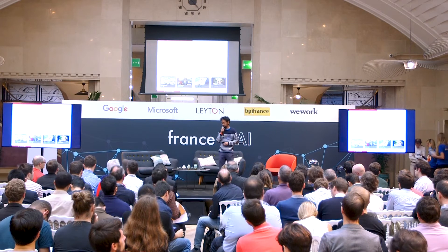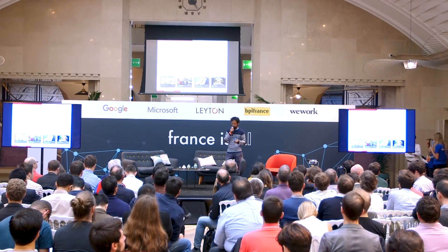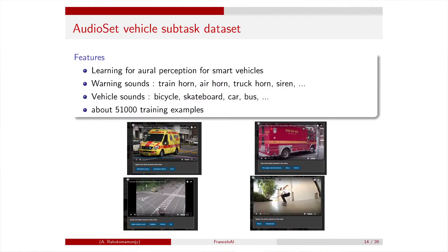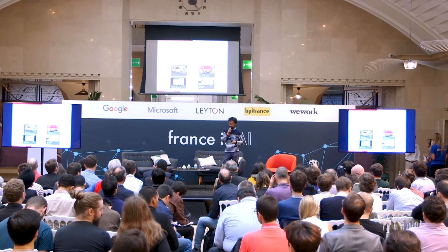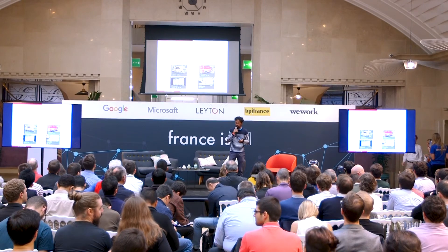For the DCASE challenge this year, we organized and extracted a subset from AudioSet focused on auditory perception for smart vehicles. We wanted to recognize warning sounds like train horns, car horns, truck horns, and sirens, as well as vehicle sounds like bicycles, skateboards, cars, and buses. There is a lot of diversity here — from a strong siren on an ambulance or fire truck to the quiet sound of a rollerboard — which makes handling this diversity quite difficult.